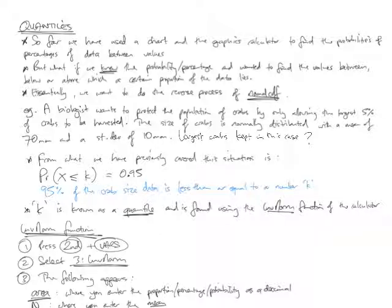If we're talking about this in the terms of our previous learning, that would be saying probability of the data being less than or equal to K, or the unknown number is going to be 0.95. 95% of the data is less than or equal to K. And what we're trying to find is what K is. What is that measurement where 95% of the data is below it and 5% is above it?